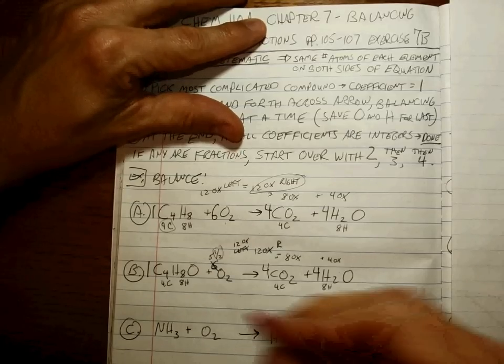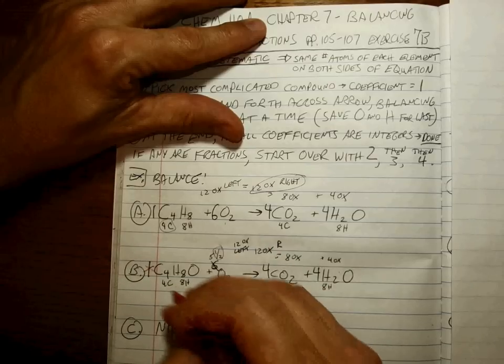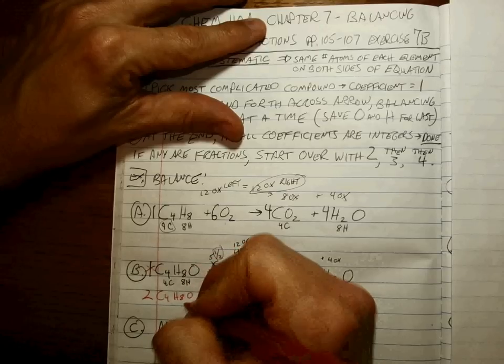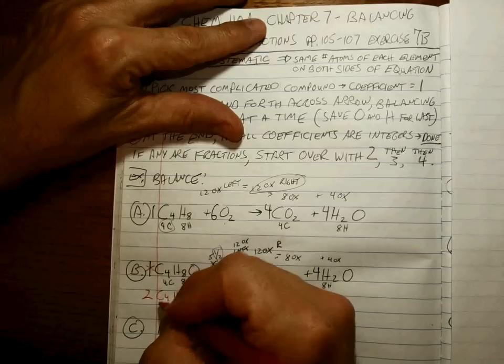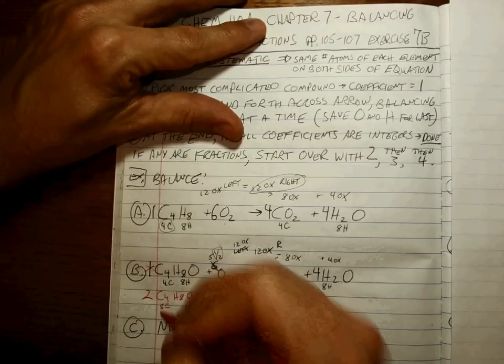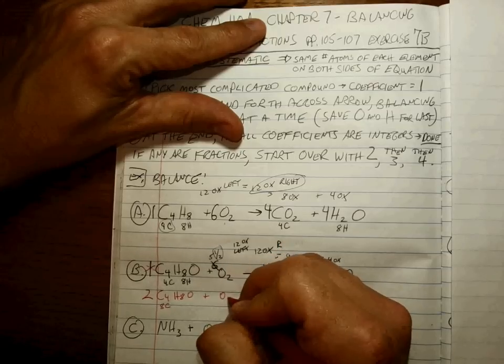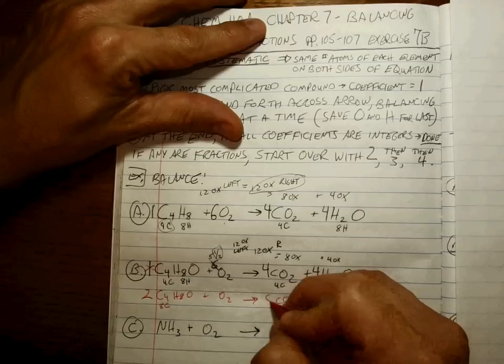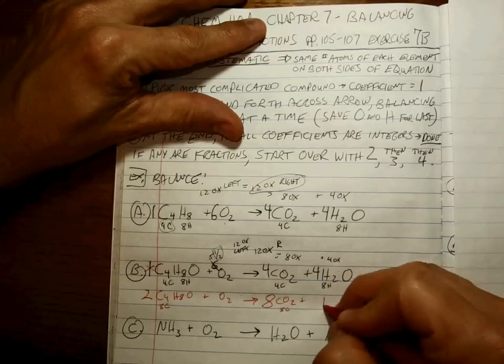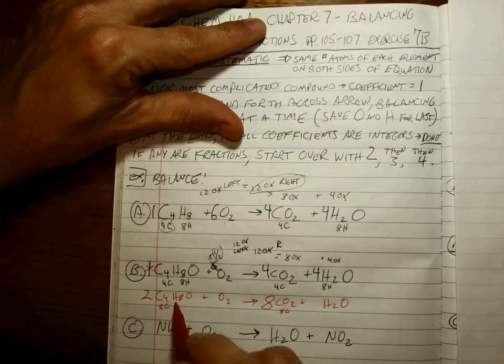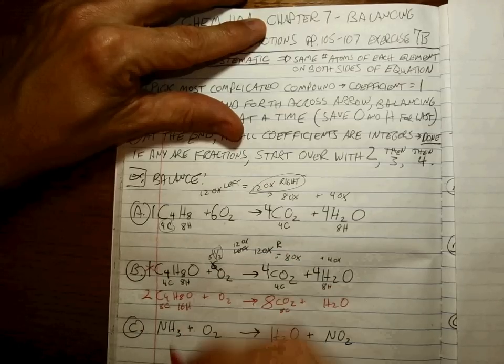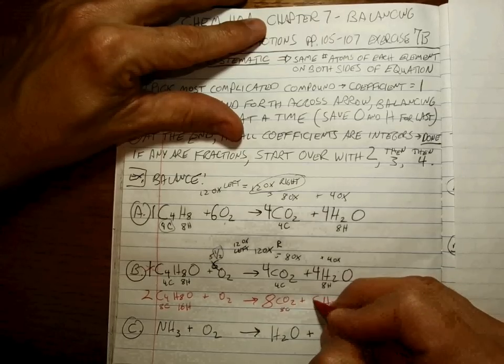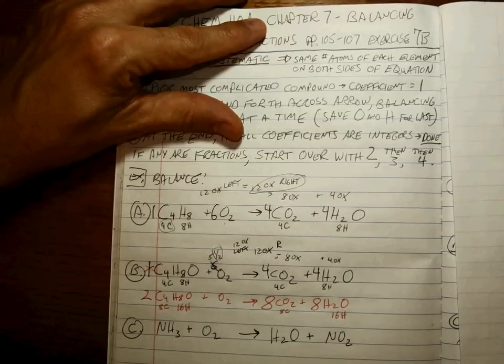We have to start over and try 2. So if there are 2 C4H8O's, that means there's a total of 8 carbons, which means we would need 8 carbons here. And 2 times 8 is 16 hydrogens. So to get 16 hydrogens, I would need to have a coefficient of 8 here.